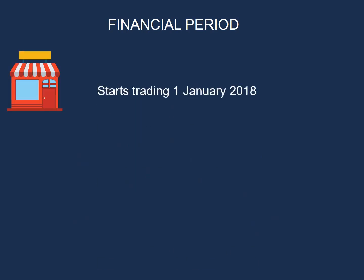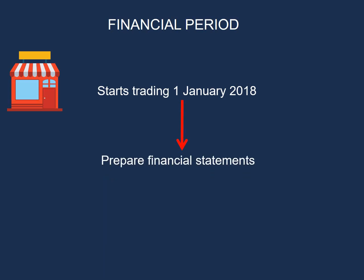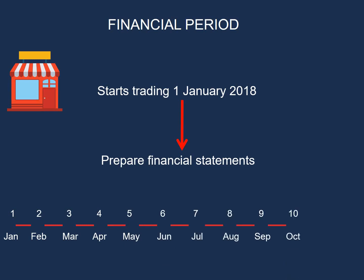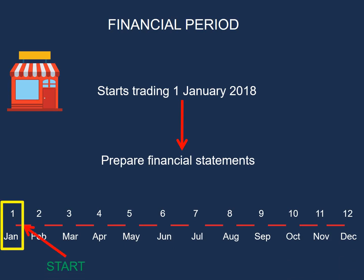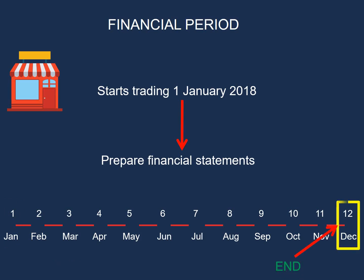A business starts trading at 1 January 2018, and after 12 months the business needs to prepare its financial statements. The first month will be January, the second month February, the third month March, and so forth until the last month, which is December. So we start at 1 January 2018 and the period ends at 31 December 2018.